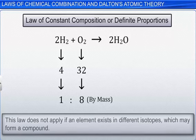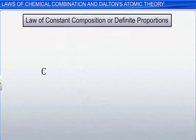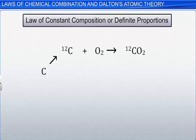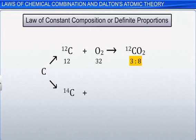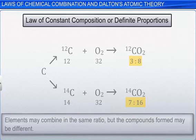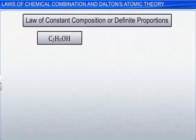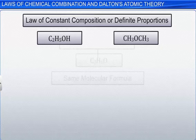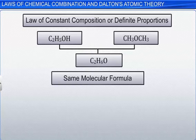However, this law does not apply if an element exists in different isotopes which may form a compound. For example, if a carbon-12 isotope combines with oxygen to form carbon dioxide, the ratio of carbon to oxygen is 3 is to 8. Another limitation of the law is that elements may combine in the same ratio, but the compounds formed may be different. For example, the compounds ethanol and dimethyl ether have the same number of carbon, hydrogen, and oxygen atoms, but their arrangement is different — that is, the compounds are different.